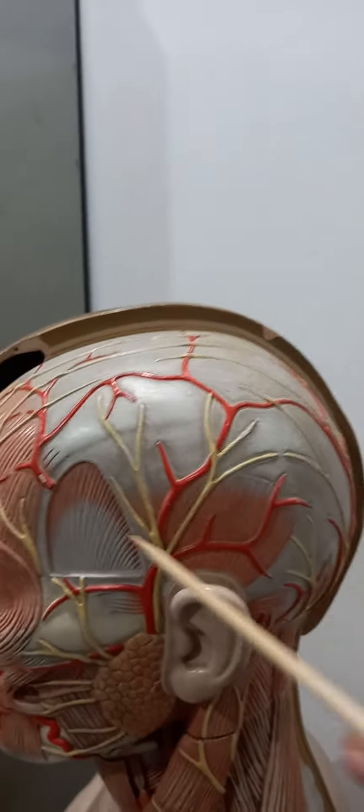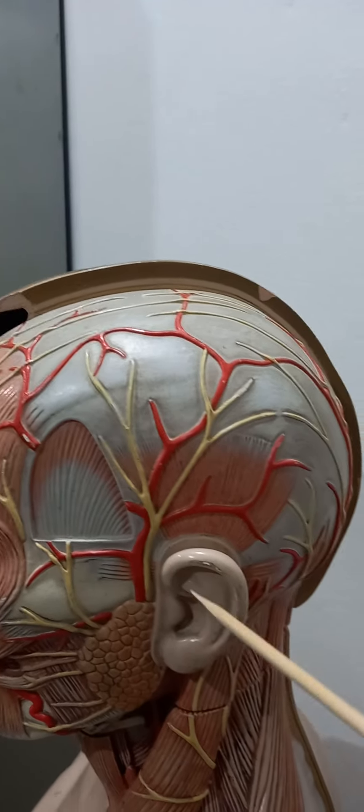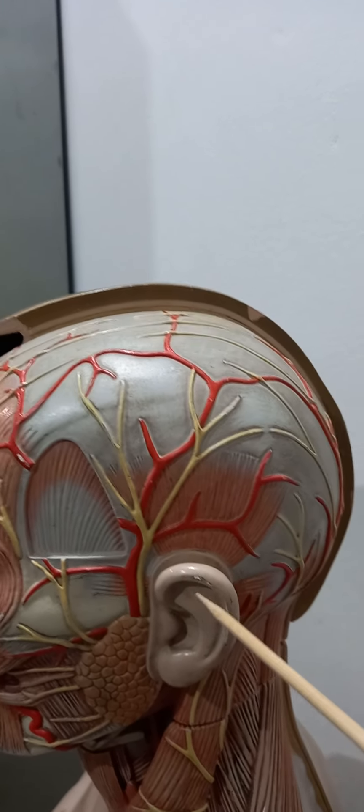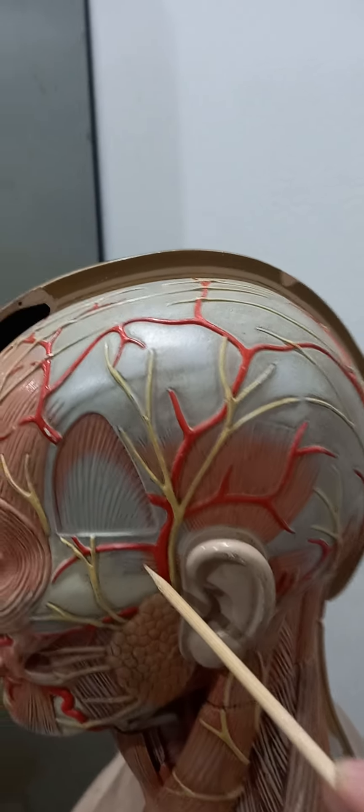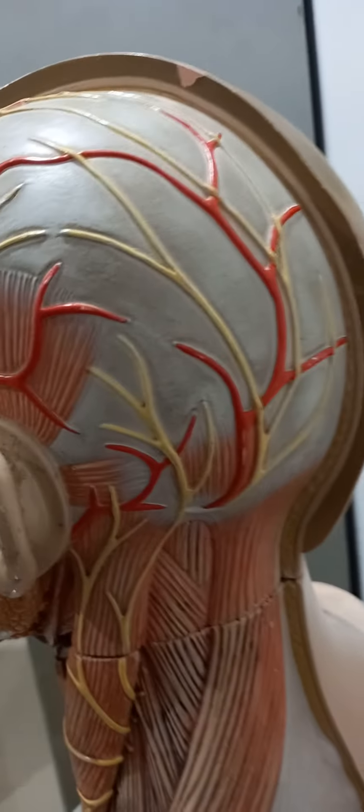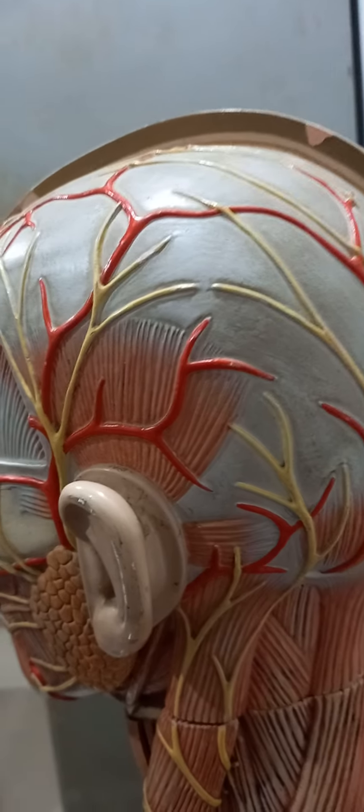This muscle is the temporalis. Then here you can see muscles of auricle: these are auricularis posterior, superior, and anterior.